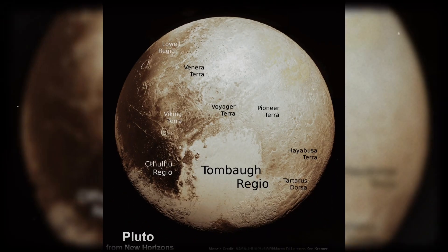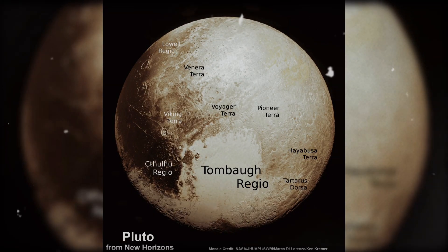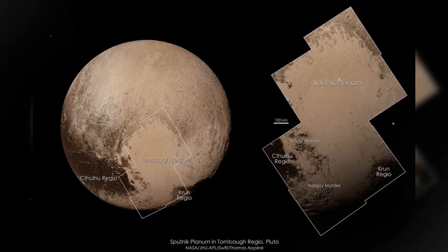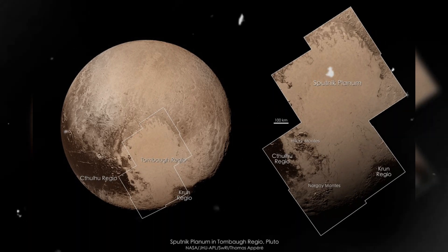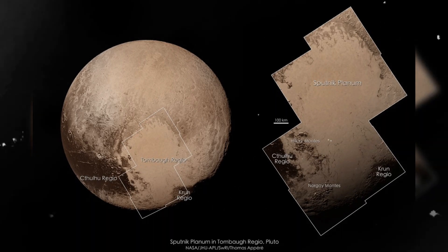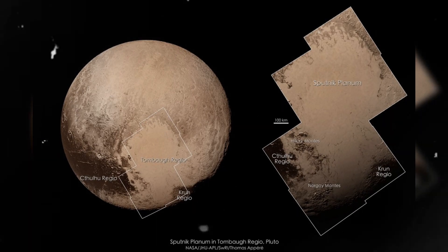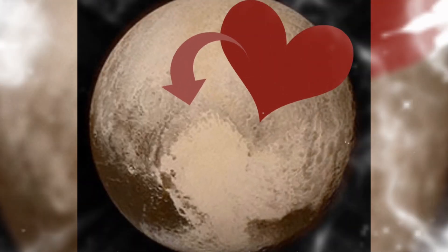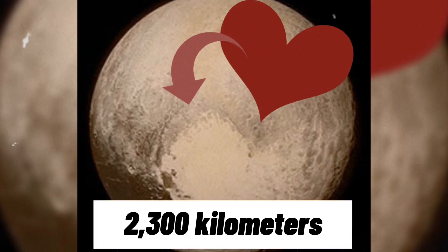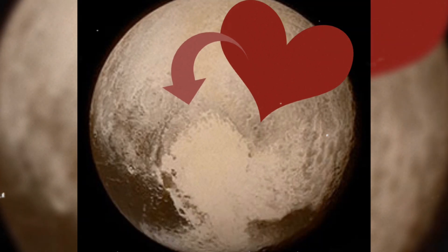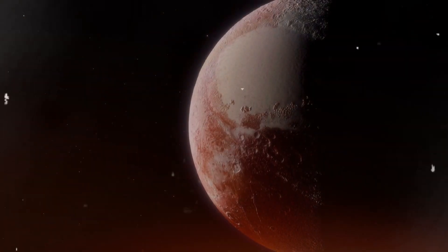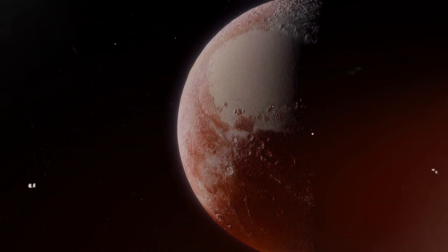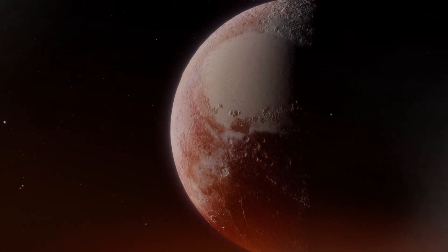When we embark on a journey to explore Pluto, one of the first enchanting sights that captures our attention is the Tombaugh Regio. This immense expanse nestled near Pluto's equator is a standout feature for its uncanny resemblance to a colossal heart, endearingly earning it the moniker The Heart. This heart-shaped domain is vast, stretching across approximately 2,300 kilometers, which equates to a quarter of Pluto's entire surface area. It's akin to stumbling upon a mammoth, frozen valentine nestled in the frigid depths of space, a captivating gem within this distant world's treasure trove.